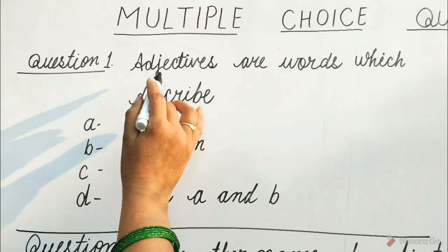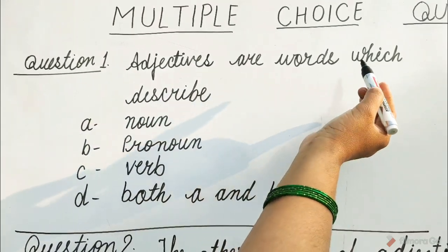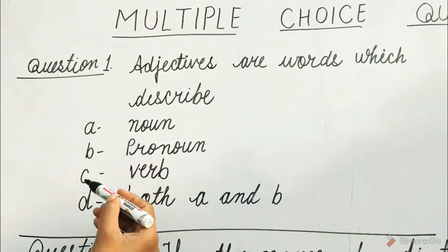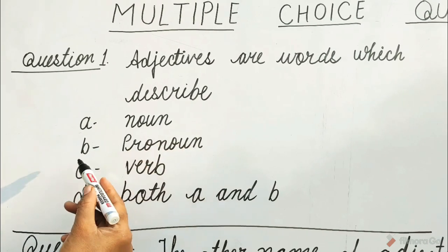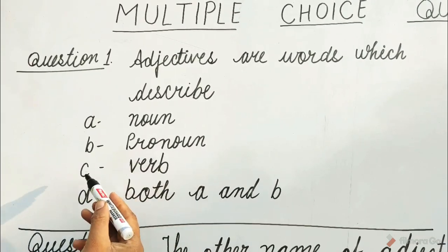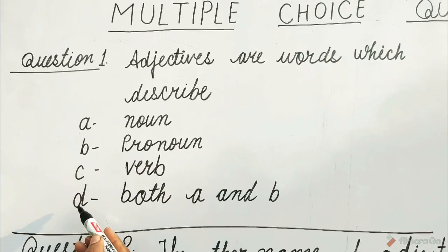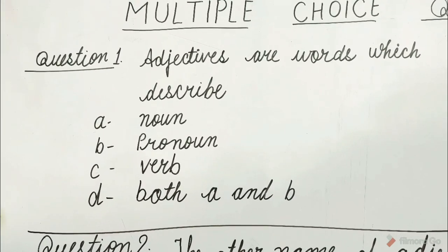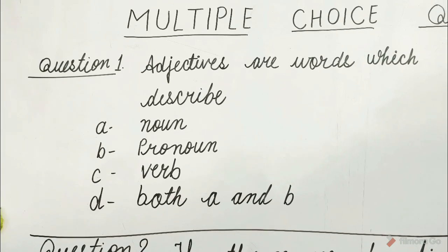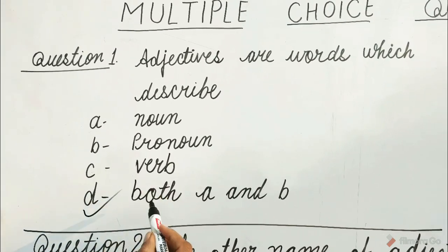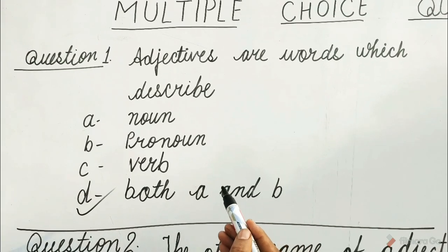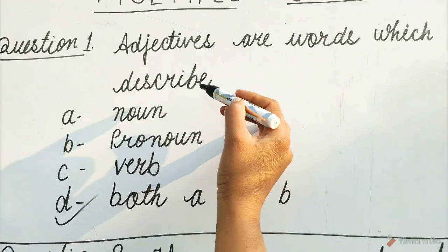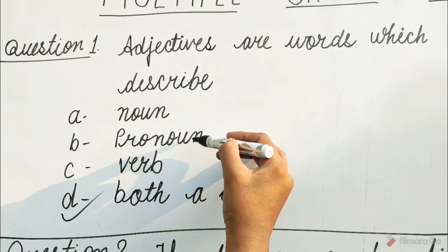Question 1: Adjectives are words which describe. Options are A. Noun, B. Pronoun, C. Verb, D. Both A and B. Guess children, which option will be correct? Yes, it is D option — Both A and B. Because adjectives are words which describe noun and pronoun.